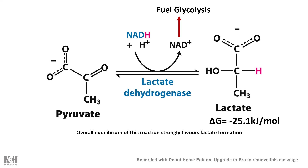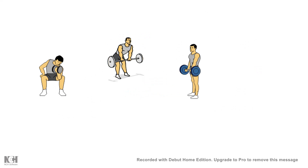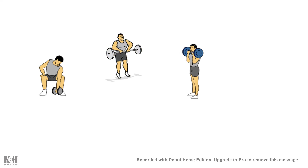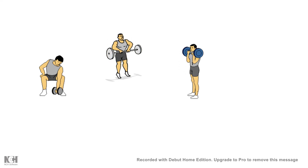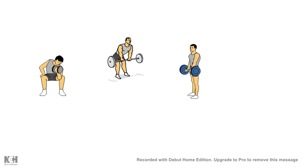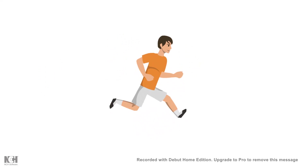The overall equilibrium of this reaction is strongly favorable for lactate formation, as understood by the negative delta G of minus 25.1 kilojoules per mole. Now imagine a situation of intense workout in your muscle — all the glucose needs to produce energy. But in a very short time, when this amount of intense workout is happening, your blood is not able to supply your muscles with enough oxygen, and an anaerobic condition is evoked.